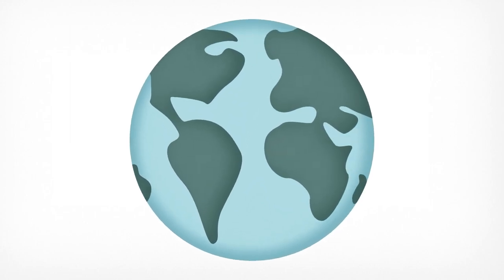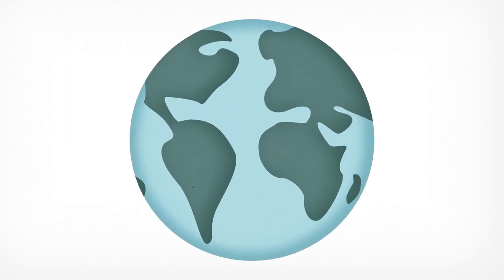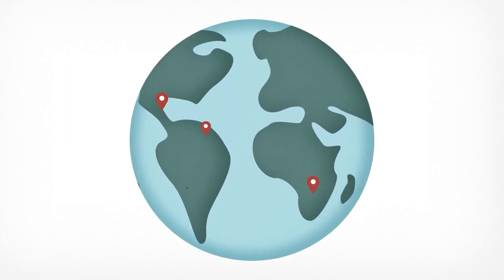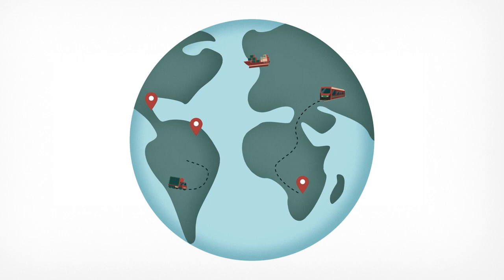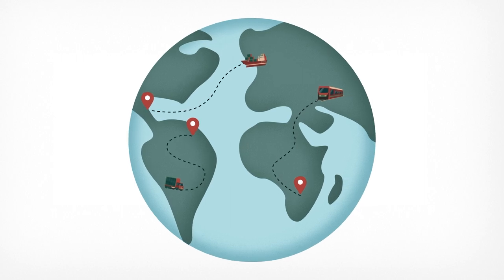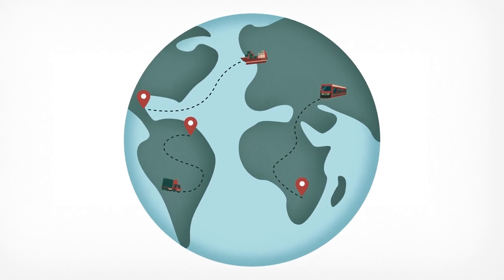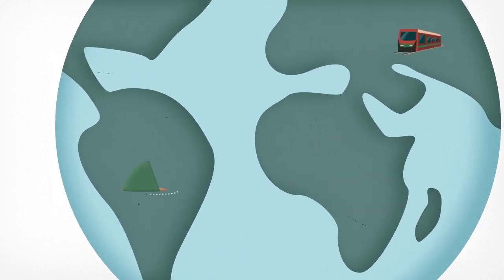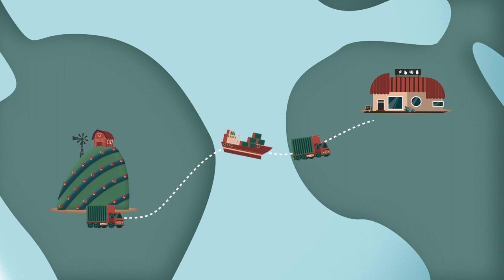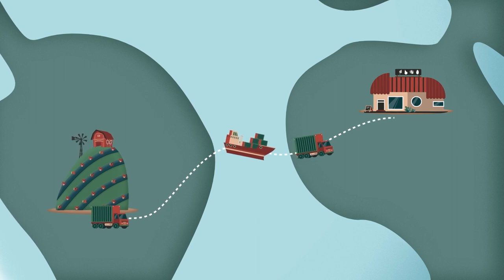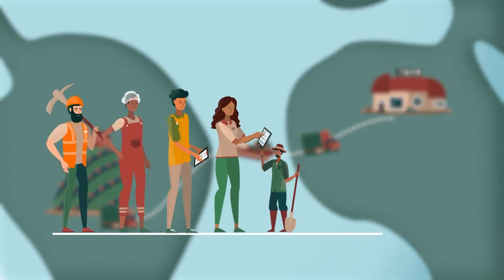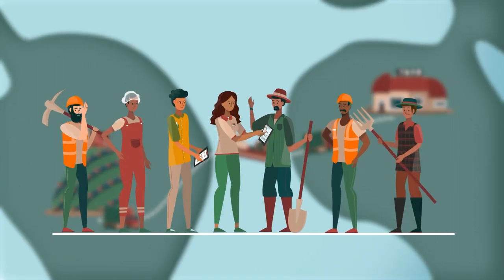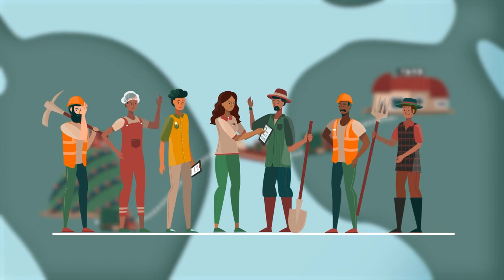Today, agricultural supply chains are more extensive than ever. Food crosses countries and oceans, moving from producers to retailers to consumers. These dynamics create millions of jobs around the world, critical for livelihoods, economic growth and development.